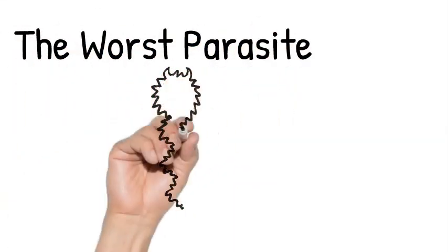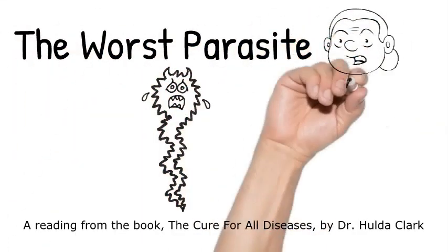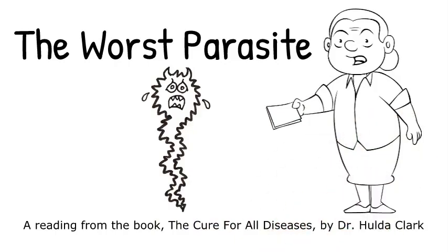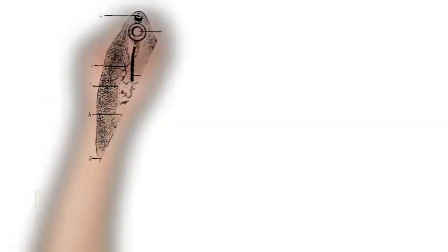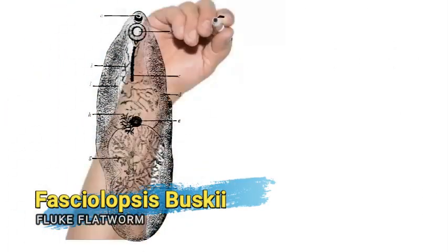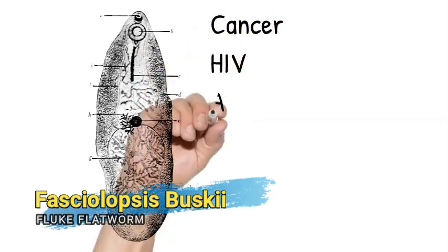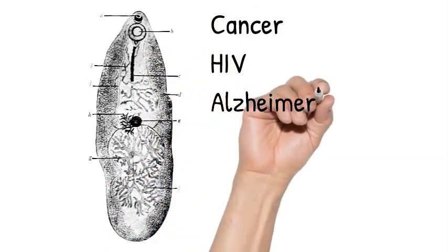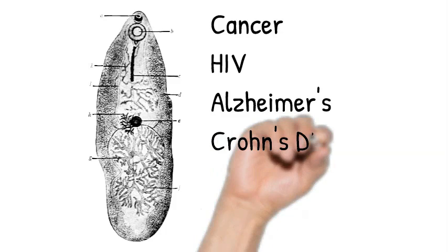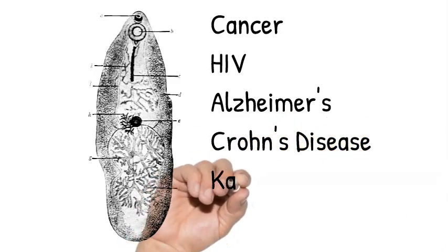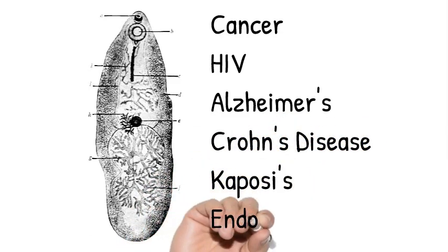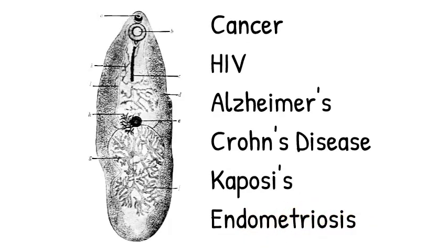The Worst Parasite. Fasculopsis buski is the fluke, flatworm, that I find in every case of cancer, HIV infection, Alzheimer's, Crohn's disease, Kaposi's, endometriosis, and in many people without these diseases.